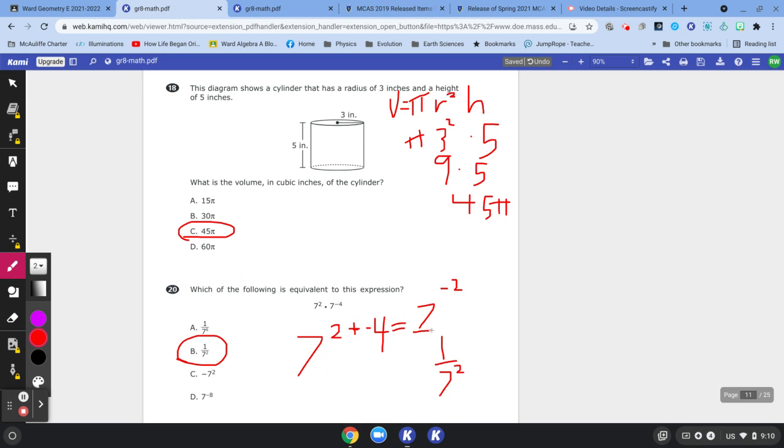Notice that this is 7 to the negative 2 over 1. When I flipped that fraction, the sign of the exponent changed. Anytime you flip a fraction, the sign of the exponent changes. That's a thing to know. But that's your answer. 7 to the 2 times 7 to the negative 4 is 7 to the 2 plus negative 4, which is 7 to the negative 2, which is the same as 1 over 7 to the 2, which would end up being 1 over 49.